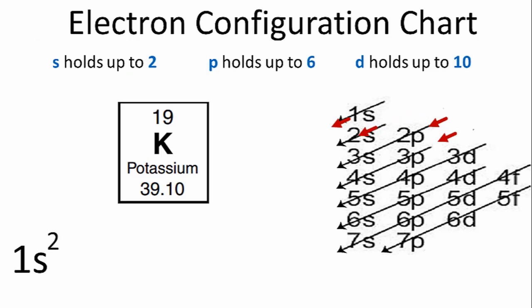Then we have the 2s in the second row. That can hold 2 electrons. We go to the third row, and the first term is 2p. p orbitals can hold up to 6 electrons, so we'll put all 6 electrons in that 2p orbital.